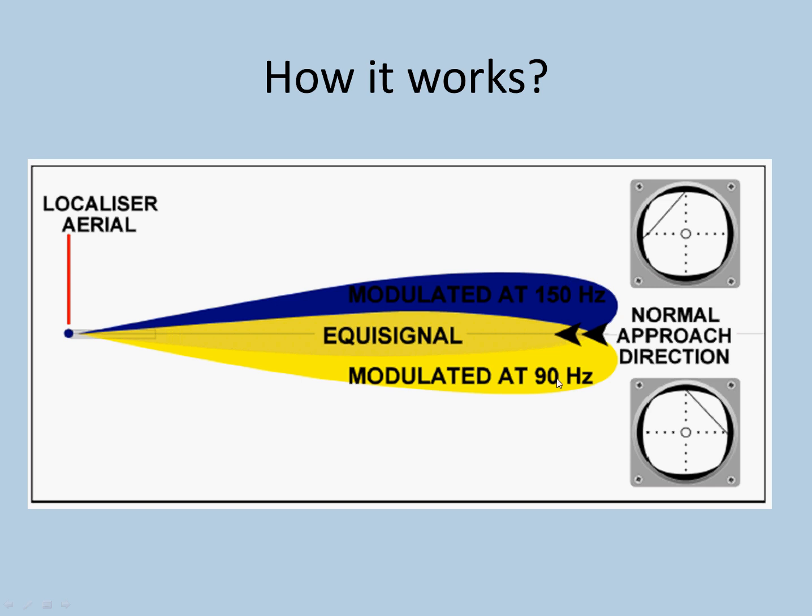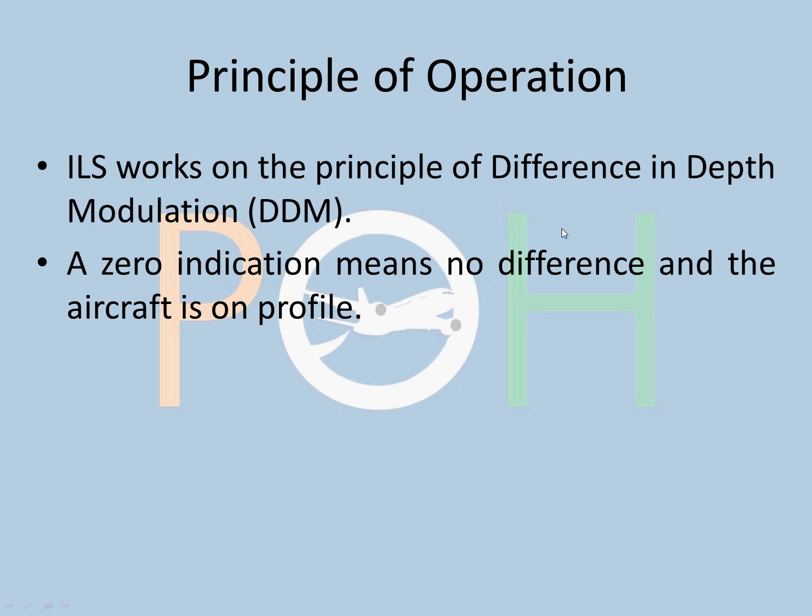Whenever he is in the yellow signal on this side, the aircraft will be asked on the indication to go to the right because he is on the left of the localizer. If he is receiving more of blue signal, he will be asked to move to the left. Once you are on profile, it will be an equi signal. That is what it means: difference in depth modulation. There is no difference now.